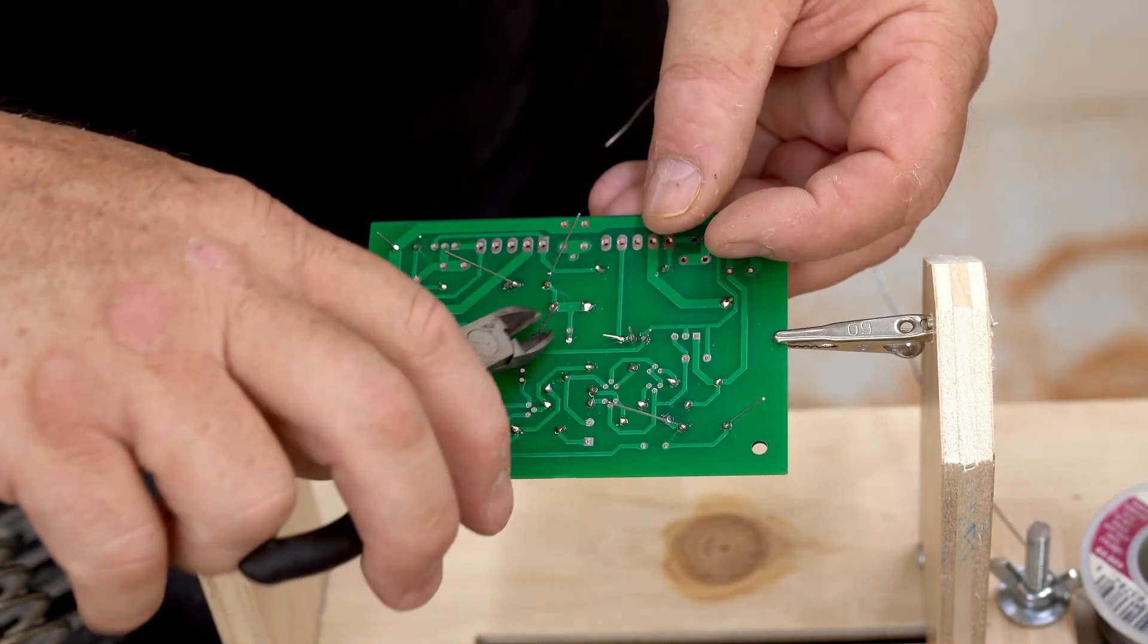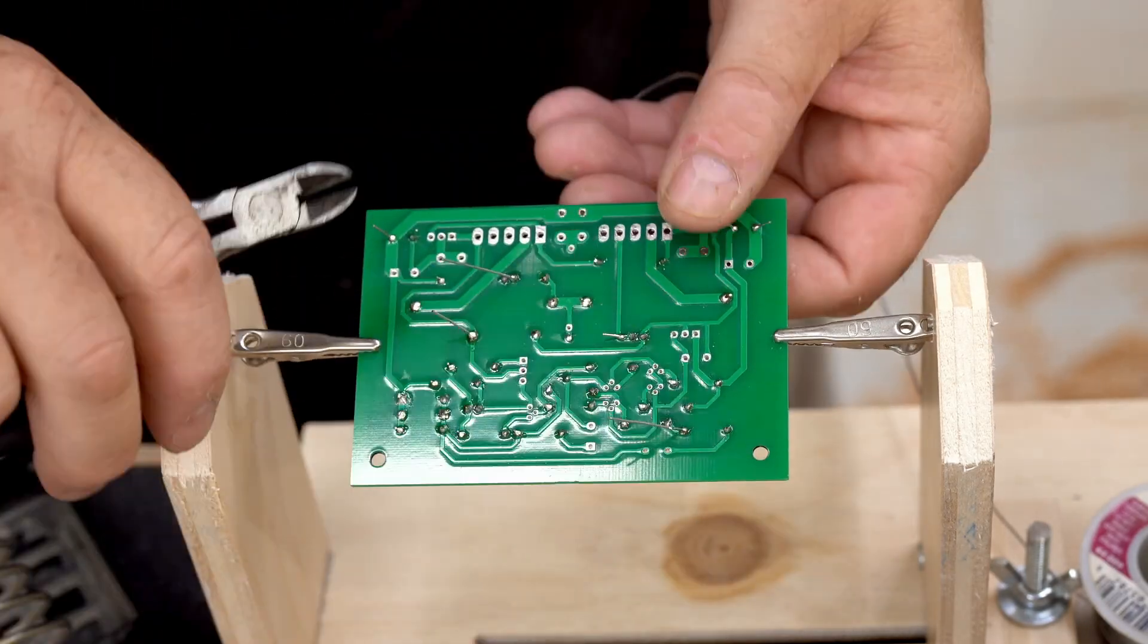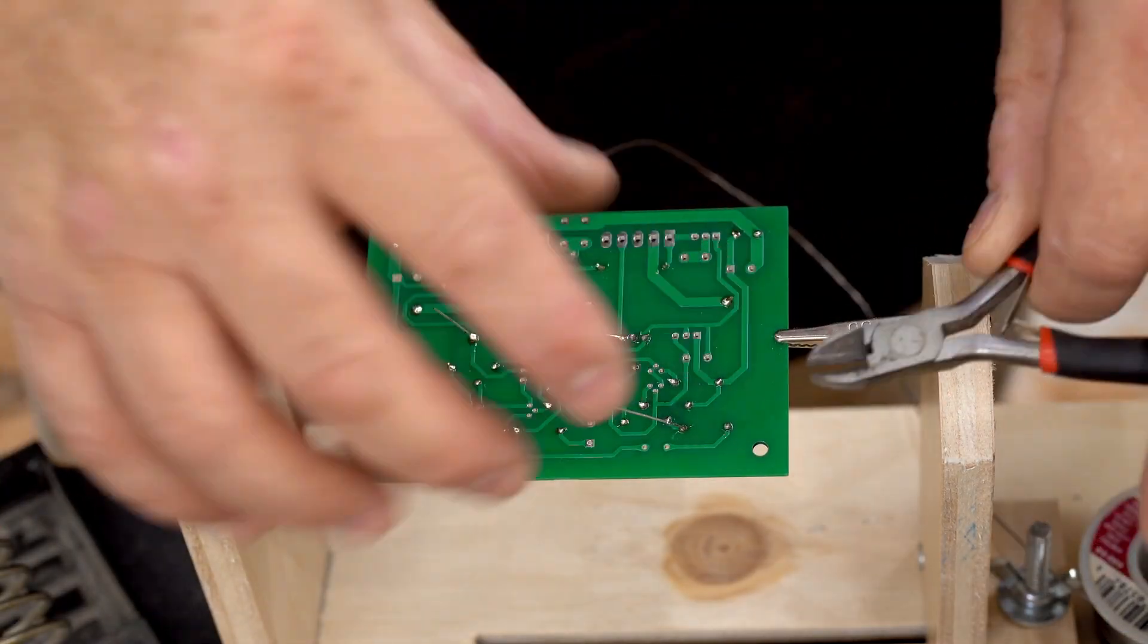As you can see, I'm putting in the bigger components. These are capacitors and also the trim pot to adjust the idle current.